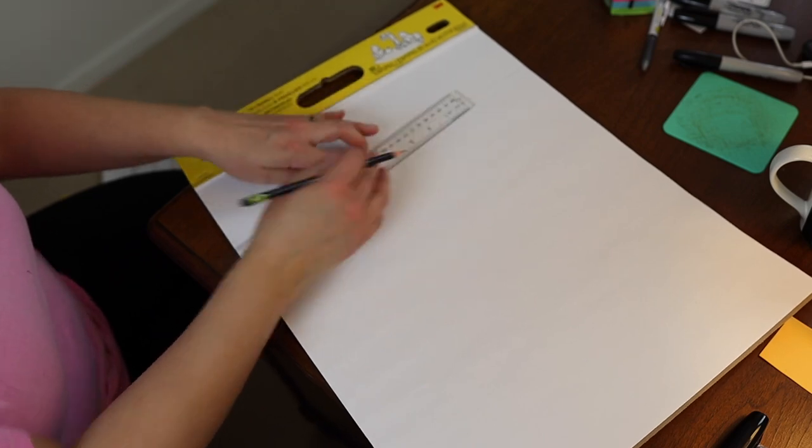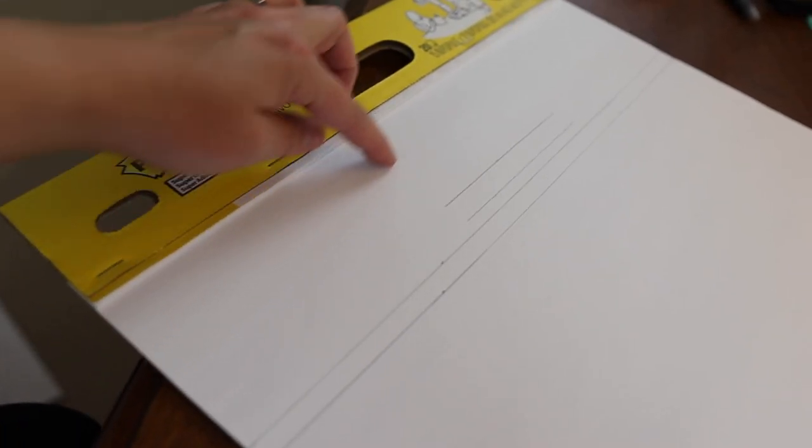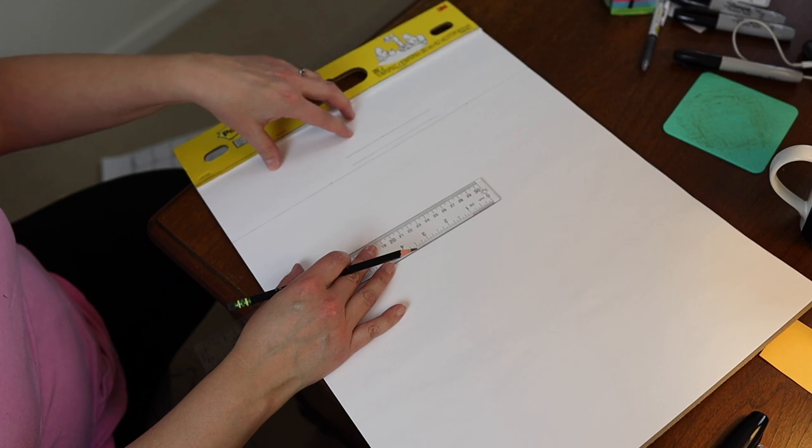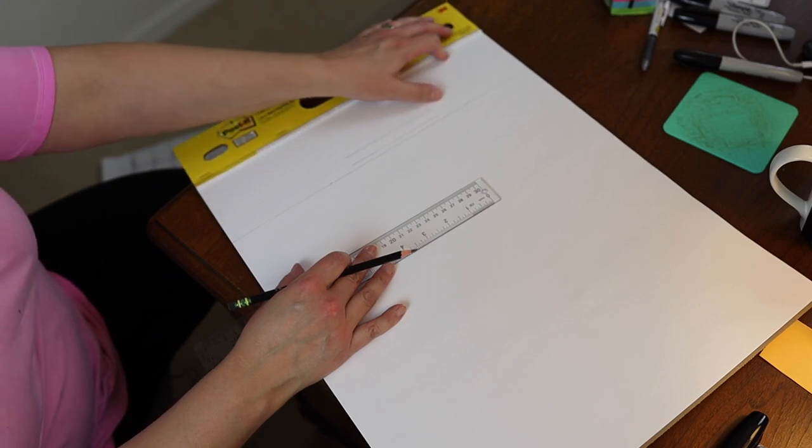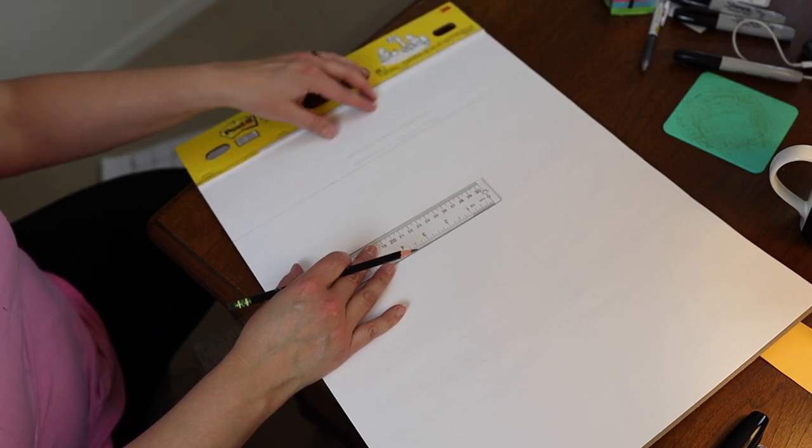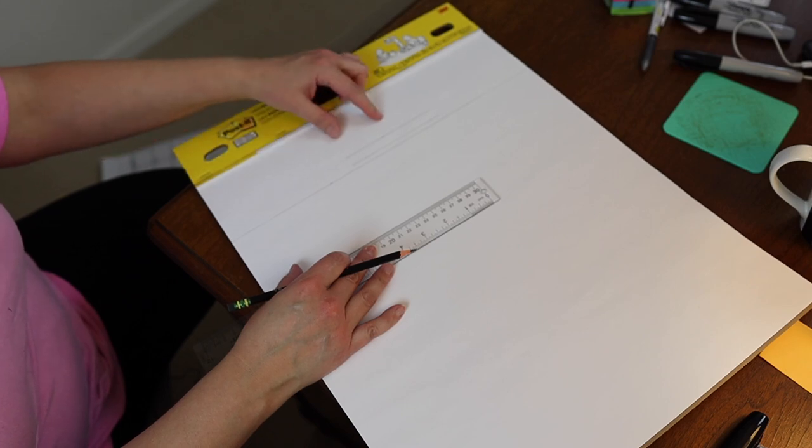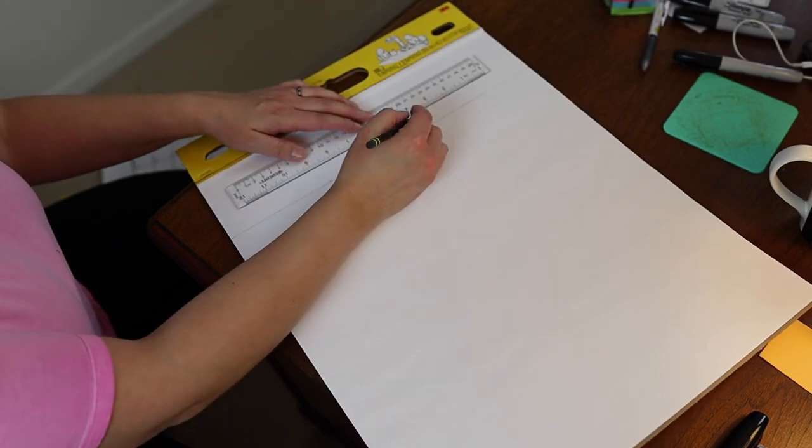So we're going a quarter of an inch up from that line. We're going to eyeball it, it's in the middle-ish. For some reason, the very top, they don't have the same texture as paper, so you can't really write very well with a Sharpie up here.